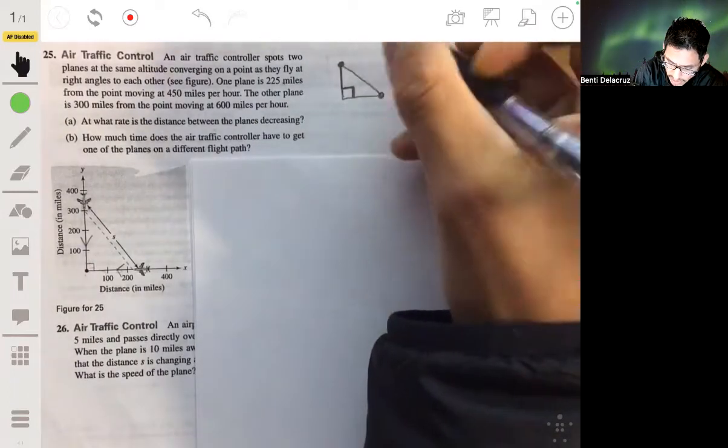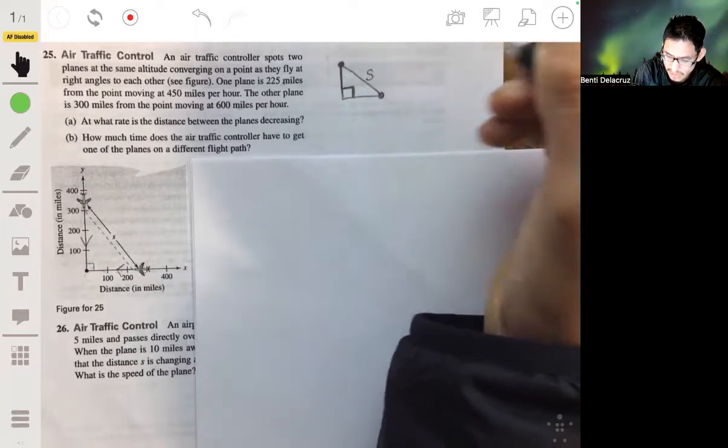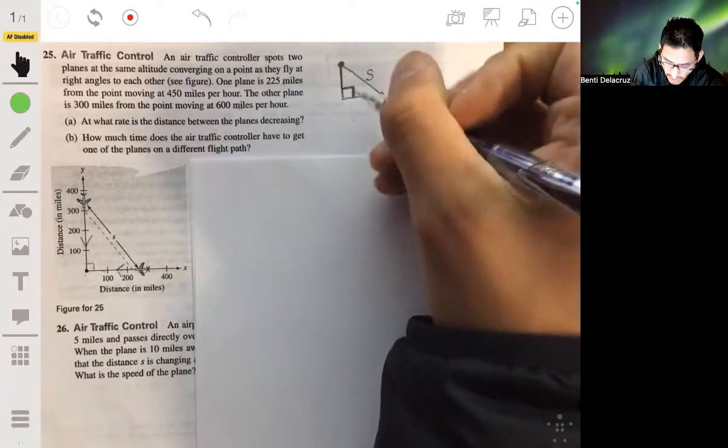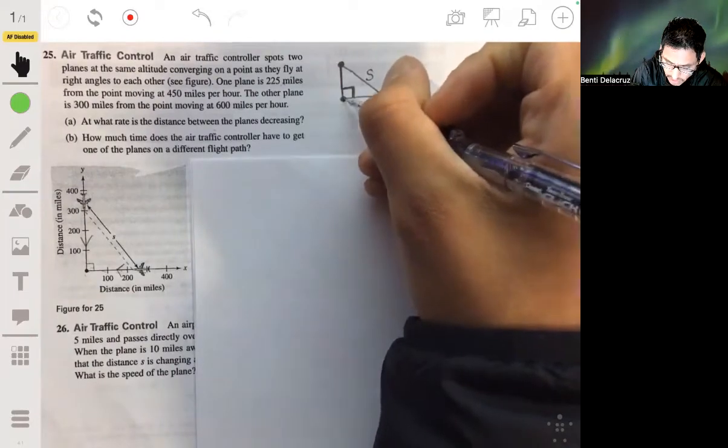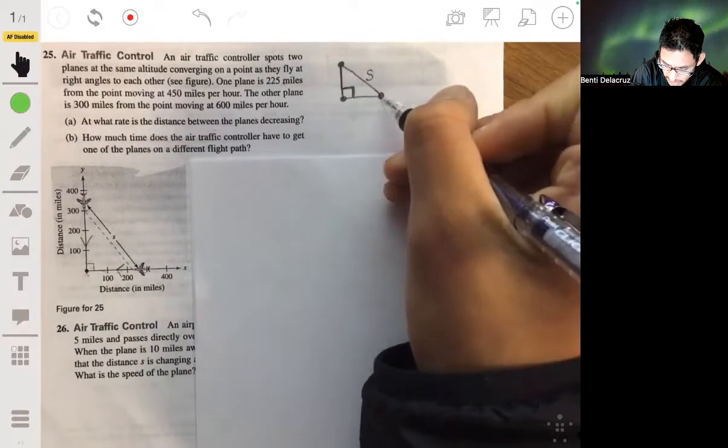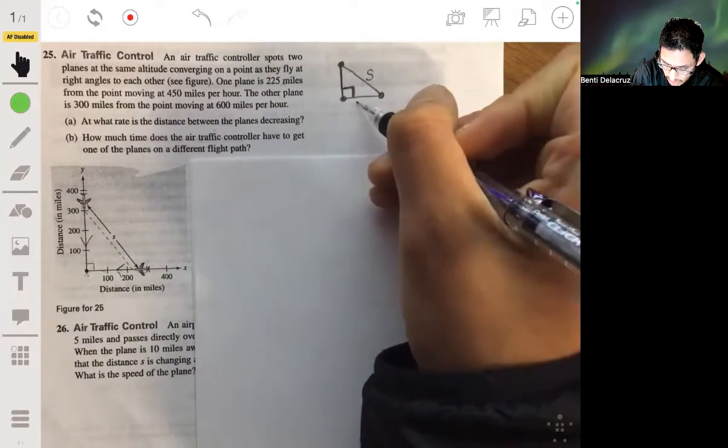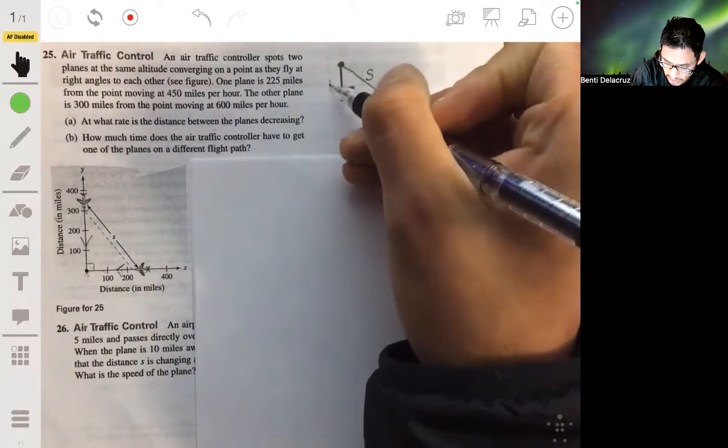The distance between these planes will be the length of the hypotenuse of the right triangle, which we're going to call S. And this is a point that we don't want them to go to - this is the point of convergence. So the distance that one plane, this plane, is from this is represented by X. The distance that this plane is from this point is represented by Y.